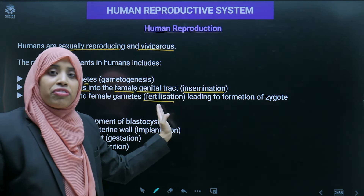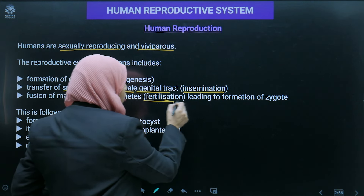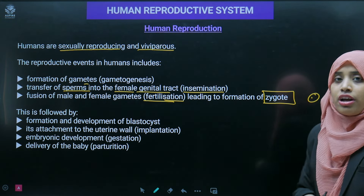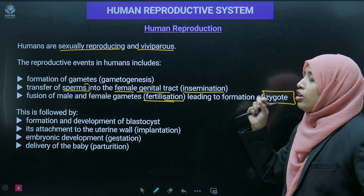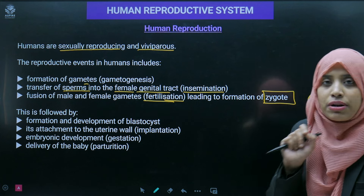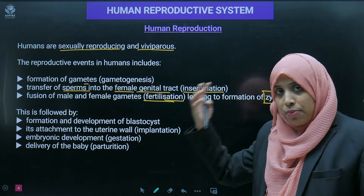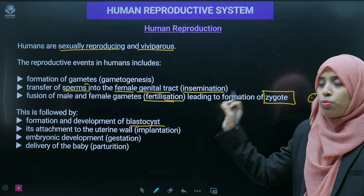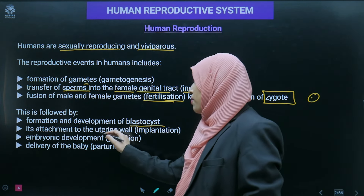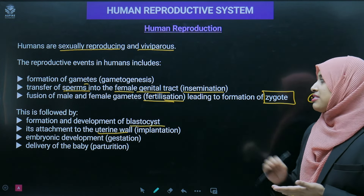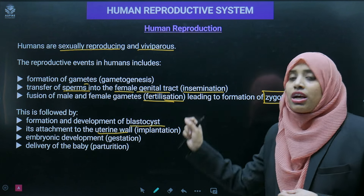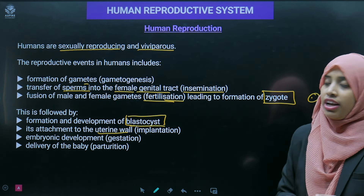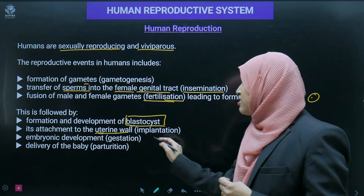After insemination, the fusion of male and female gametes takes place — this is called fertilization, which leads to the formation of a zygote. The zygote is a single cell. It then undergoes a developmental process: it changes into a blastocyst, which attaches to the uterine wall — a process known as implantation.